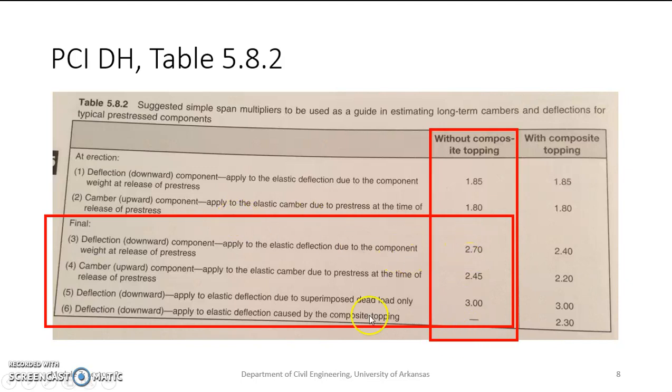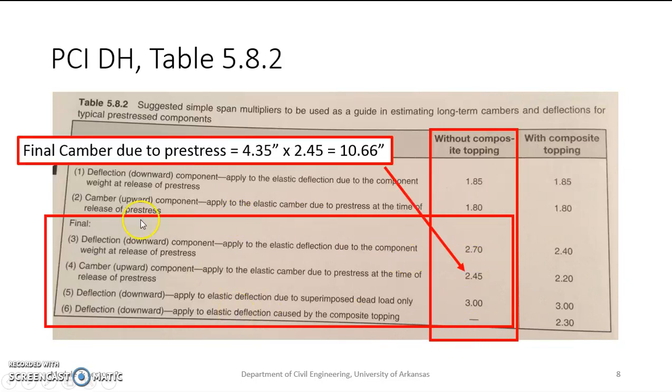We know the final camber due to pre-stress is going to be equal to our initial camber times this 2.45 factor. So our initial camber is 4.35 multiplied by 2.45. So at the very end of the beam's life, the camber, the upward deflection due to the pre-stressing force would grow to 10.66 inches.